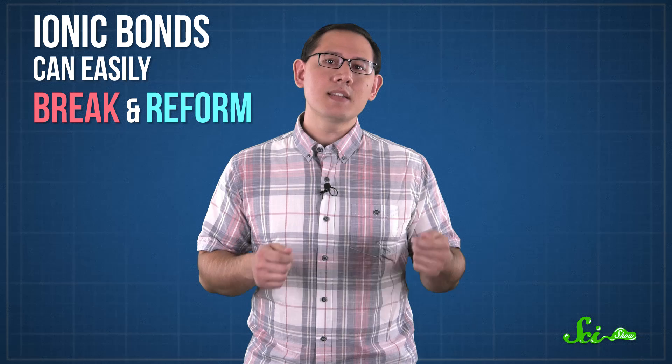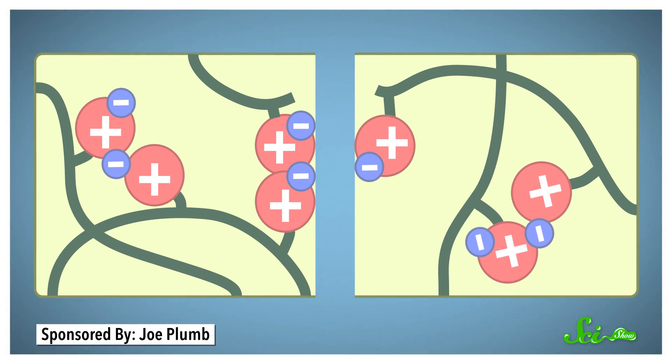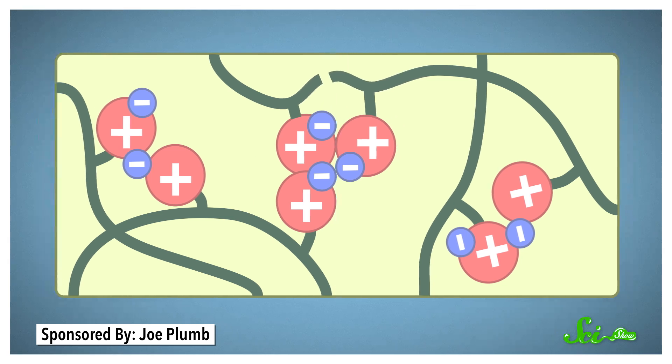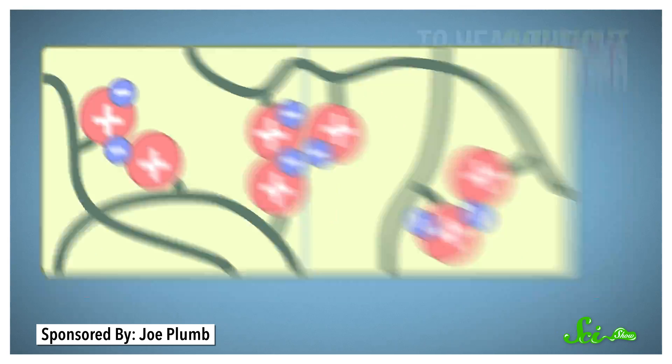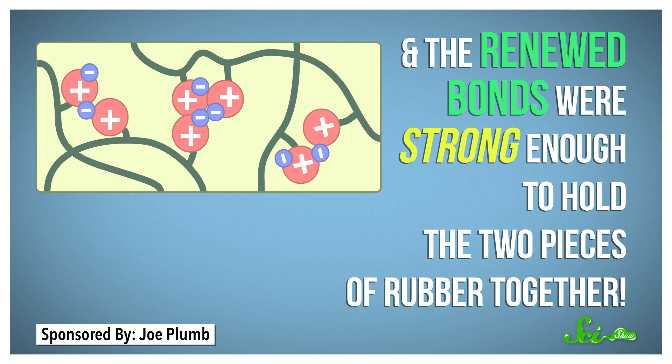But the crucial thing about ionic bonds is that they can easily break and reform, just like the snaps on a jacket. So when the researchers cut into strips of their new rubber, the ionic bonds broke. But pushing the two pieces together allowed the pairs to find each other again and form new ionic bonds. To heal the cut quickly, the scientists added heat to jostle the molecules around and help those lonely pairs bump into each other. And the renewed bonds were strong enough to hold the two pieces of rubber together.